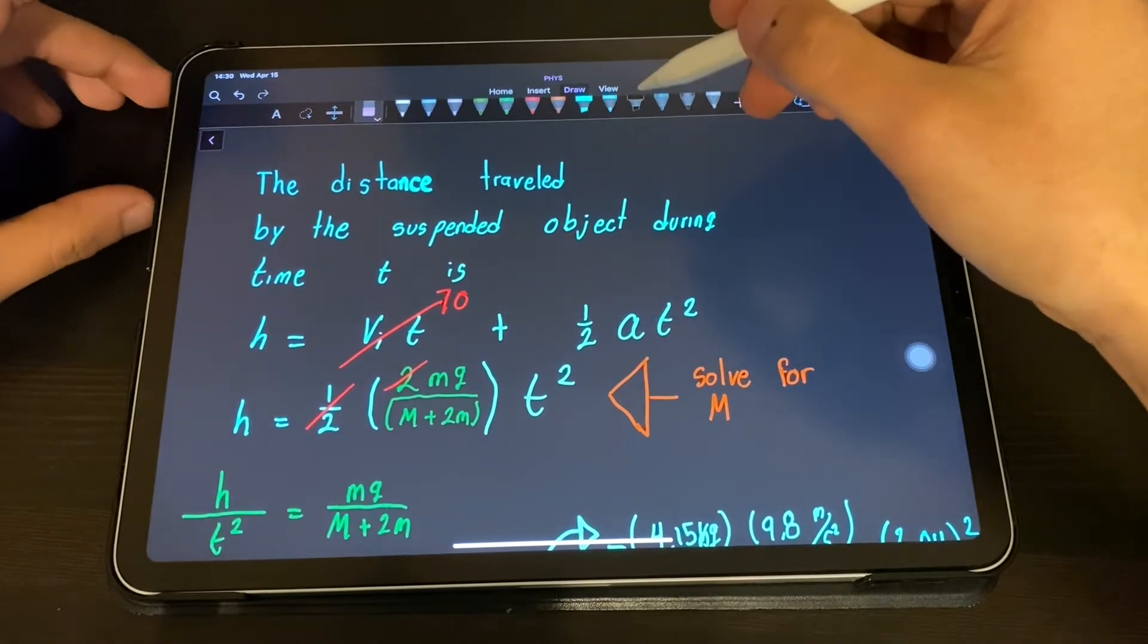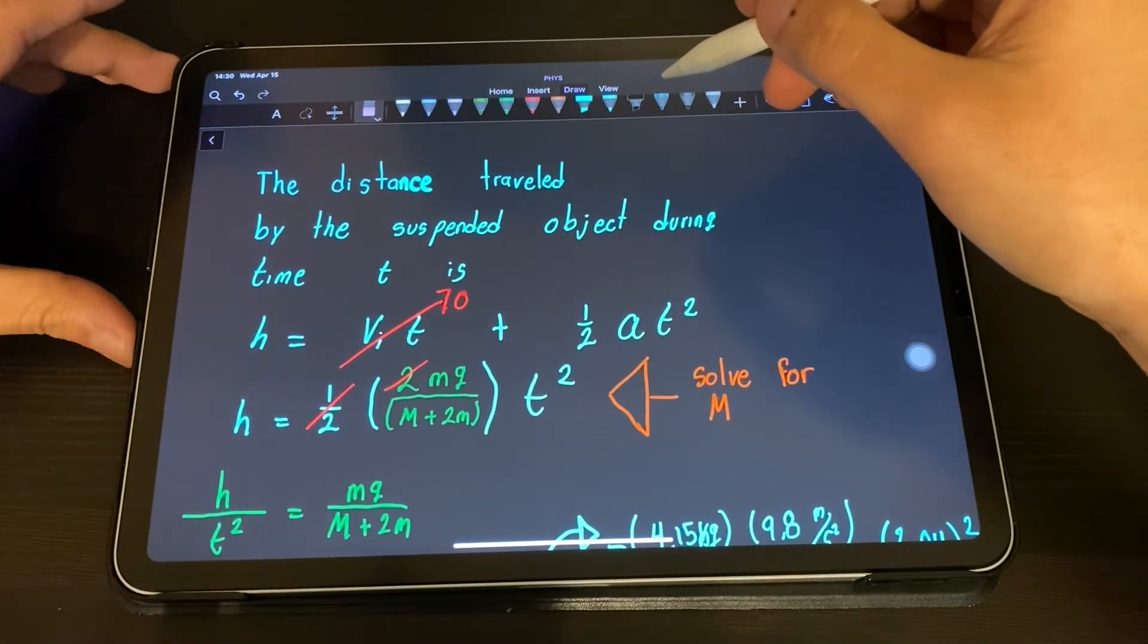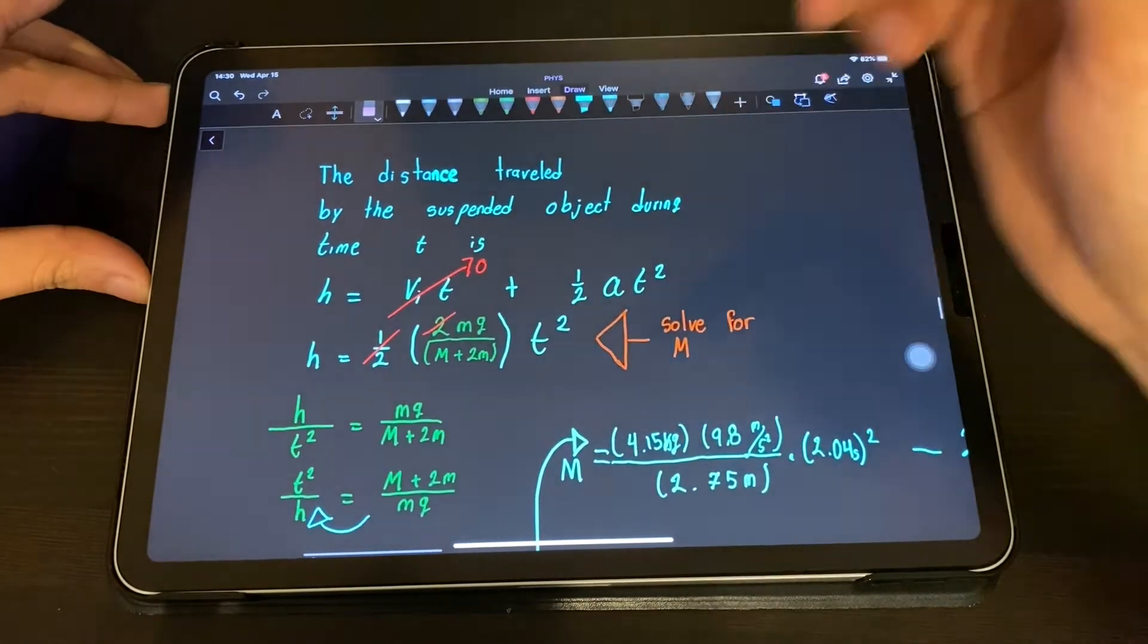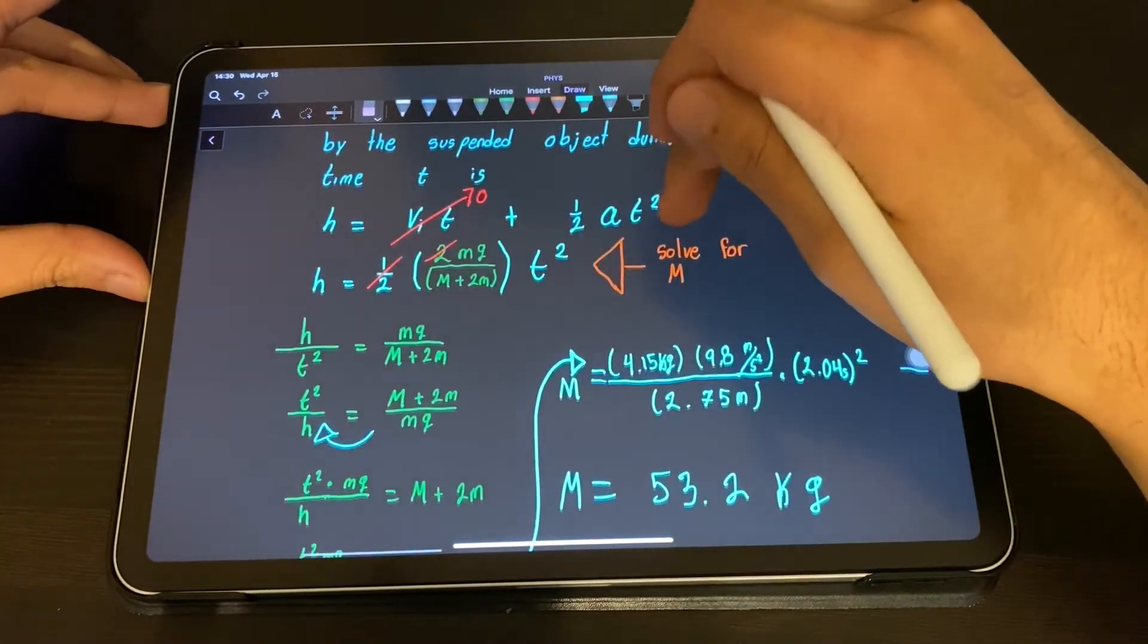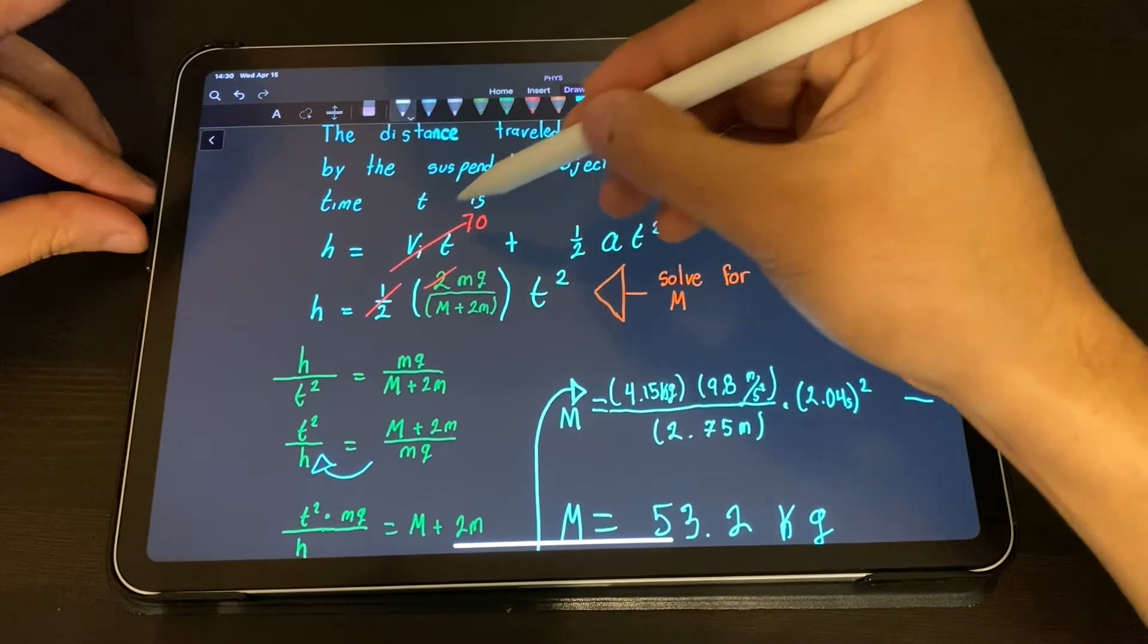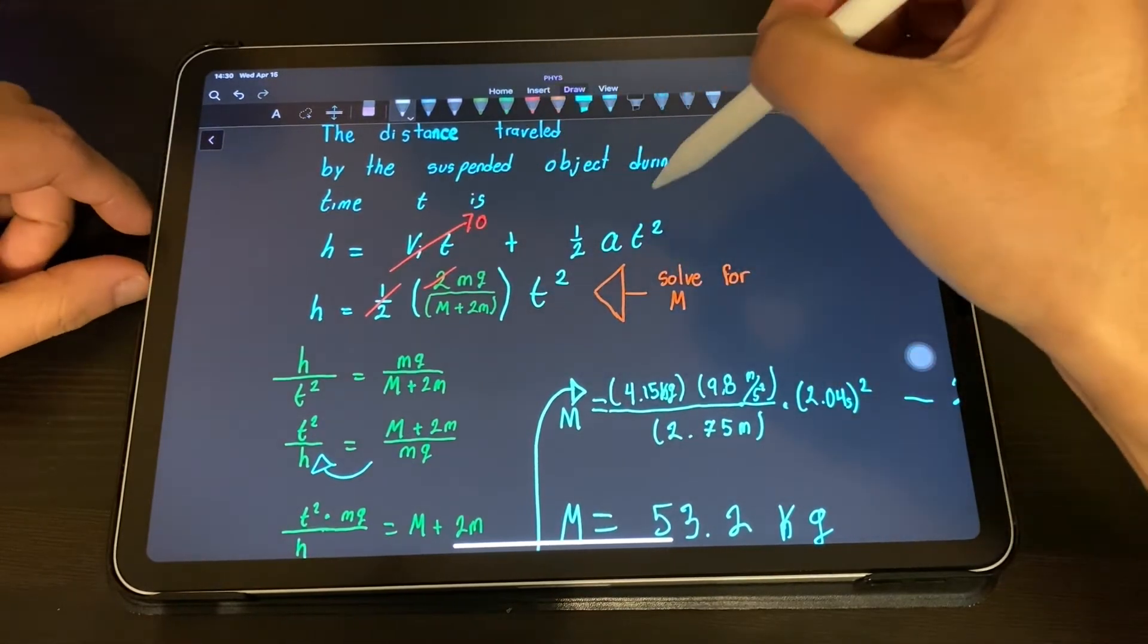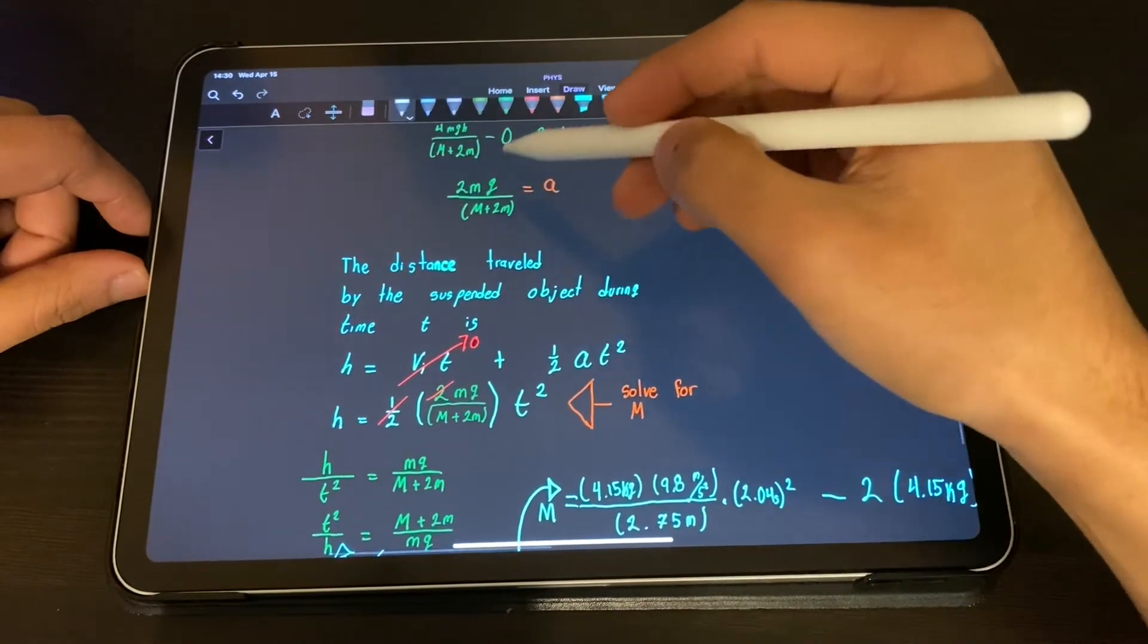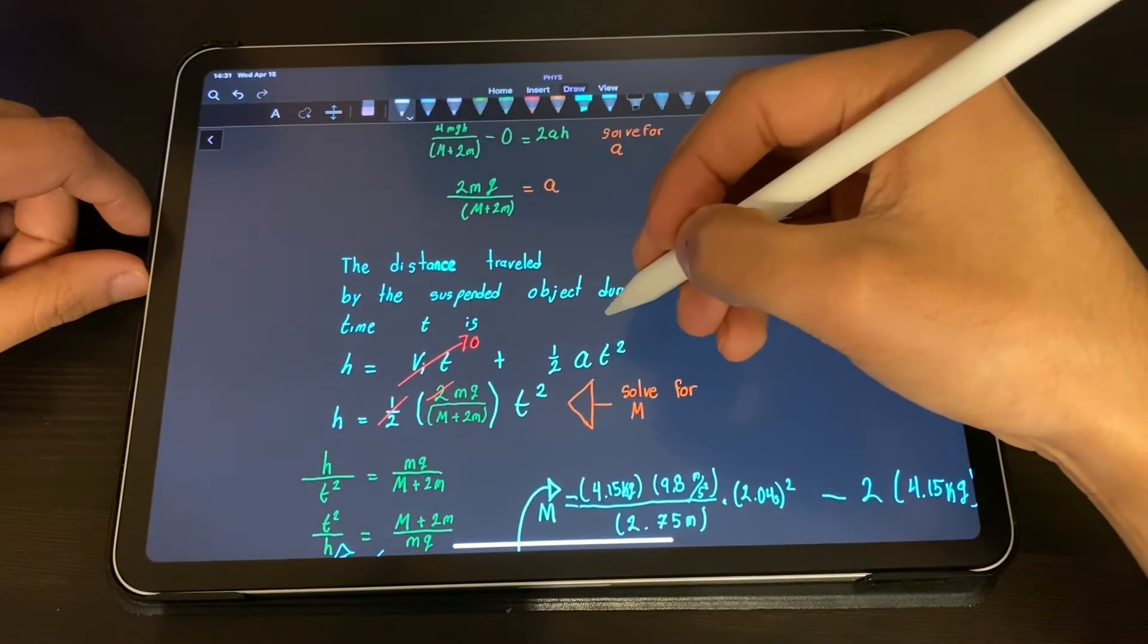We have the distance traveled by the suspended object during that time which we have. So we plug in the acceleration which is what we found right here and we have the time.